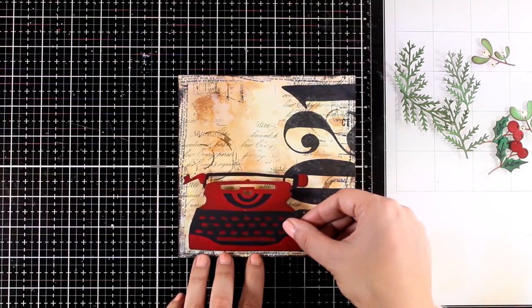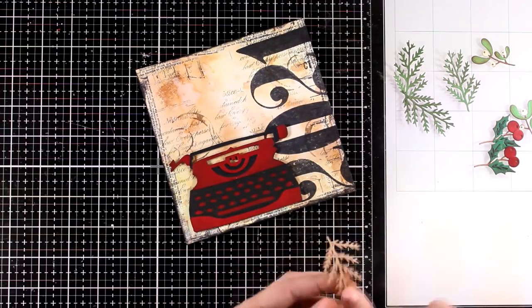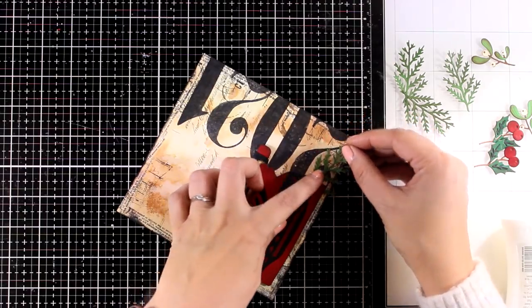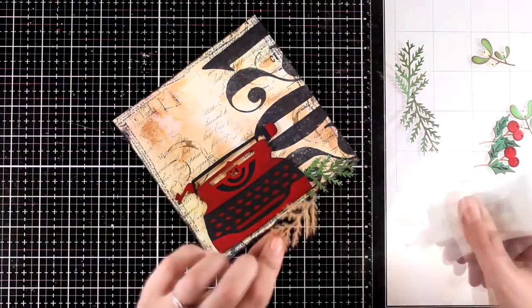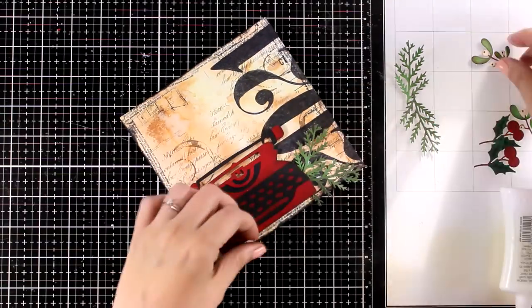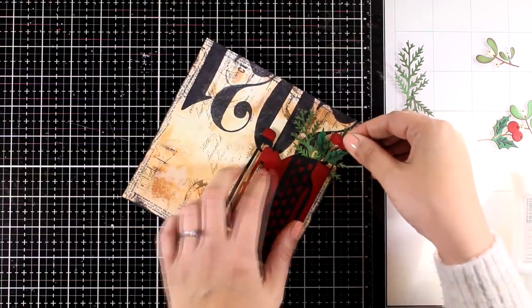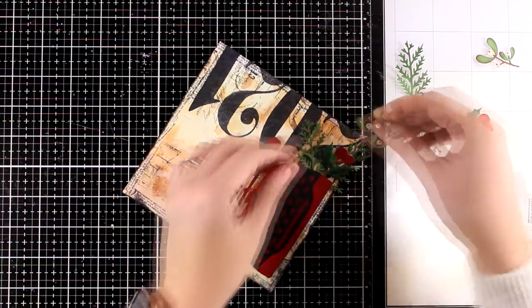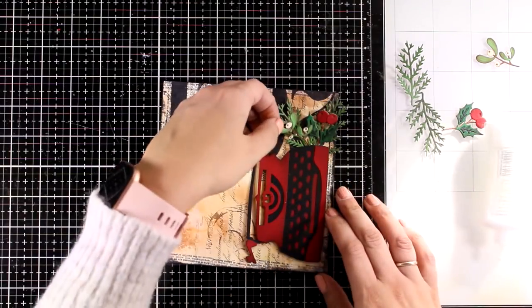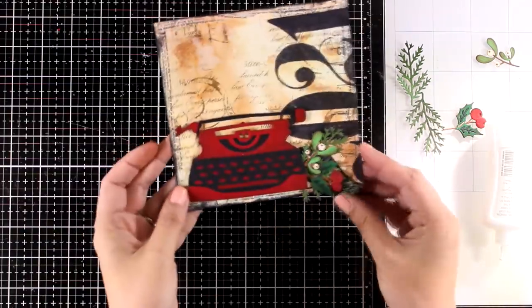So I'm sticking down my typewriter, and I do have some dimension by adding some foam tape at the back. Then I'm going to tuck underneath the typewriter the foliage that I die cut. I'm going to create a couple of clusters, one on each side of the typewriter, and you can go wild here. You can add as many as you like. I decided to keep it quite simple. And if you notice, I did use lots of different shades of green, so one element on top of the other is going to pop, and they're not going to all blend together.